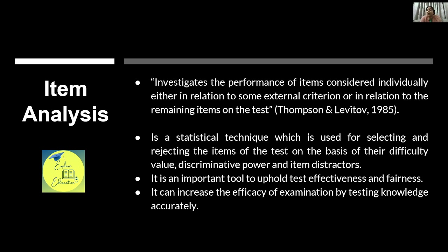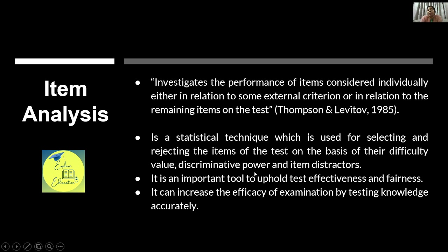Items are selected or rejected on the basis of their difficulty value, discriminative power, and item distractors. Difficulty value tells us how hard the item is; discrimination power tells us whether the item differentiates between students; and a distractor is something that creates difficulty in reaching the correct answer. Based on all three, we keep or remove items.